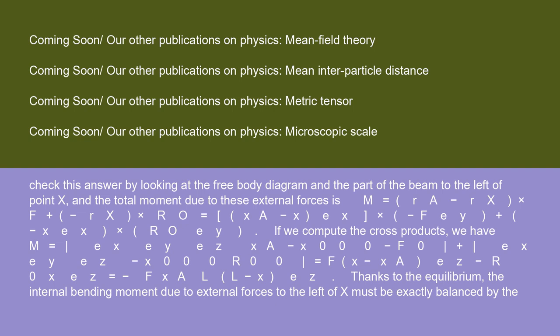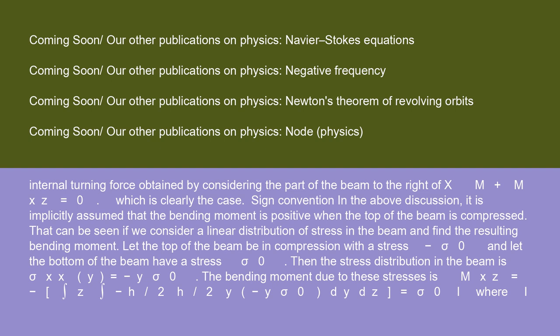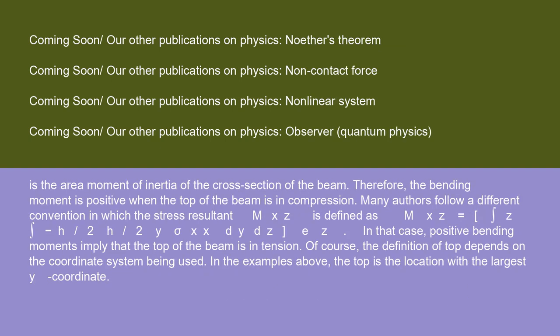Thanks to the equilibrium, the internal bending moment due to external forces to the left of x must be exactly balanced by the internal turning force obtained by considering the part of the beam to the right of x: M + Mxz = 0, which is clearly the case. Sign convention: in the above discussion, it is implicitly assumed that the bending moment is positive when the top of the beam is compressed. That can be seen if we consider a linear distribution of stress in the beam and find the resulting bending moment. Let the top of the beam be in compression with a stress -σ0, and let the bottom of the beam have a stress σ0. Then the stress distribution in the beam is σxx(y) = -y·σ0. The bending moment due to these stresses is Mxz = -∫z ∫-h/2^h/2 y(-y·σ0) dy dz = σ0·I where I is the area moment of inertia of the cross section of the beam. Therefore, the bending moment is positive when the top of the beam is in compression.